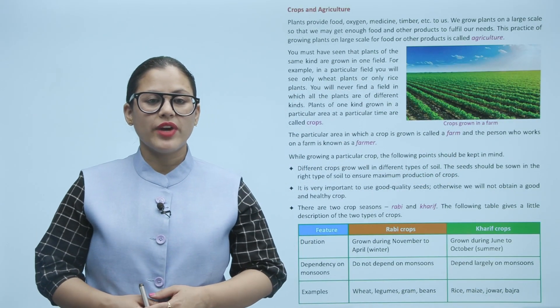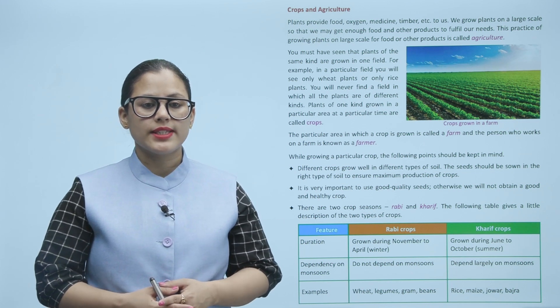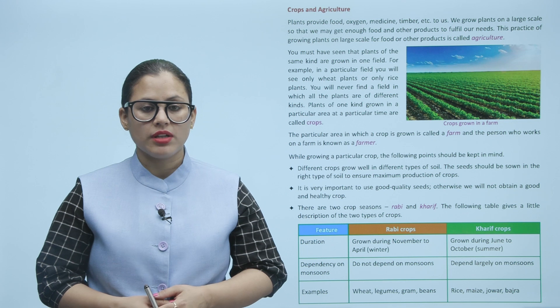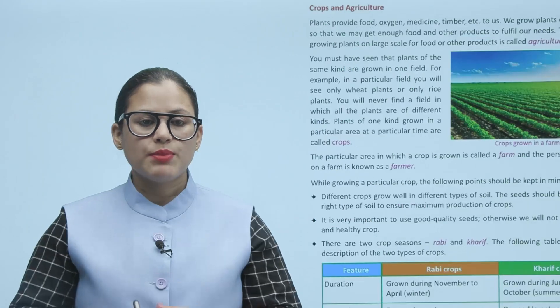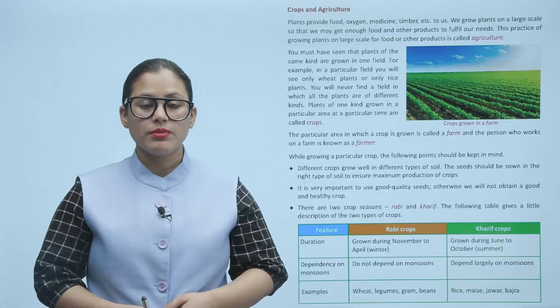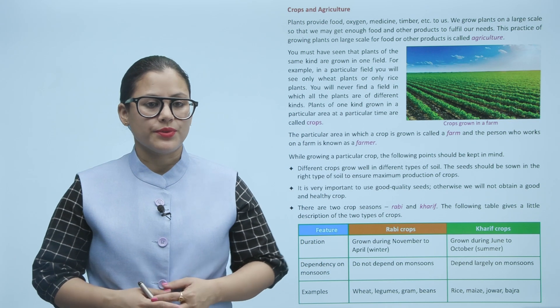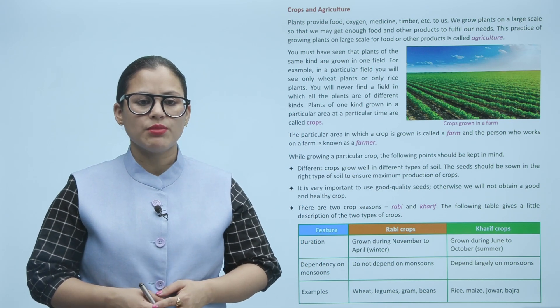Crops and agriculture: Plants provide food, oxygen, medicine, timber, etc. to us. We grow plants on a larger scale so that we may get enough food and other products to fulfill our needs. This practice of growing plants on large scale for food or other products is called agriculture.